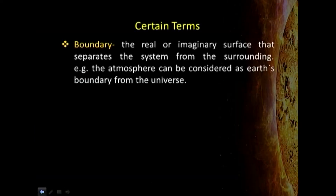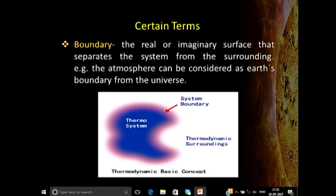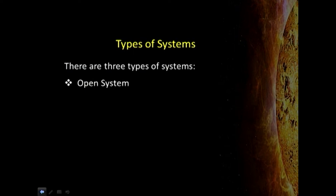The boundary can be real or imaginary — we can take a system surrounded by a steel wall or a brick boundary, or it can be imaginary, where we assume a space in the air surrounded by an imaginary boundary. The system is the most important thing in chemical thermodynamics because it is the part of the universe we are interested in. Depending upon its interaction with the surroundings, a system can be of different types: open system, closed system, or isolated system.